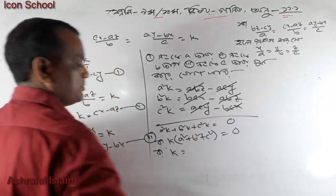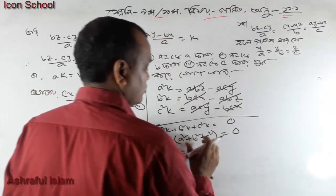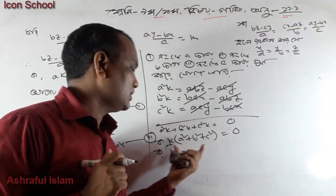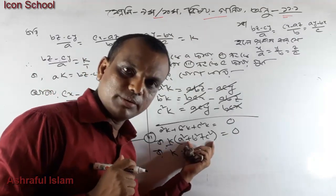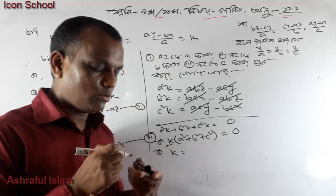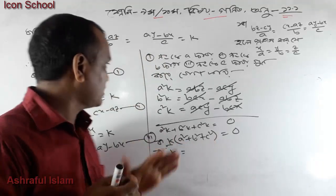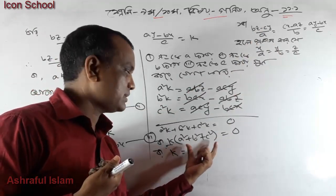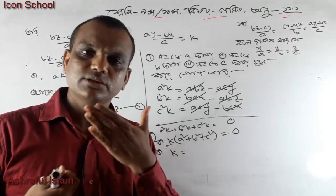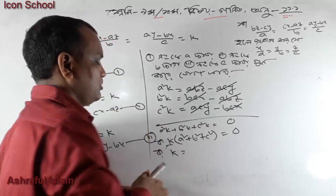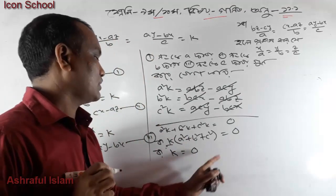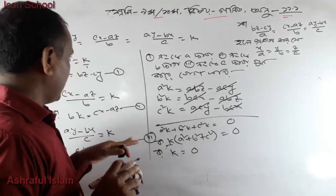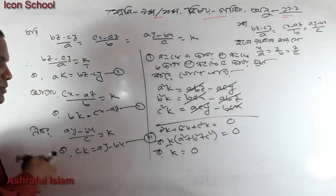That is the conclusion. So if we have 2 points, we have 0. If we have 0 points, then we have 0 points. But we know that ABC is not 0. So we can say a squared plus b squared plus c squared equals 0.